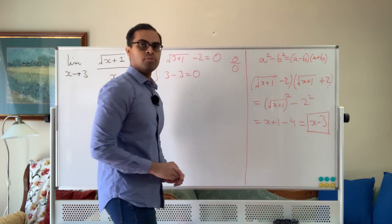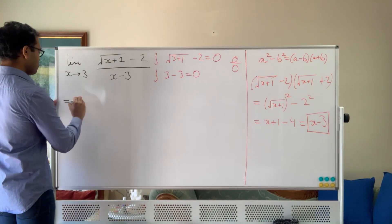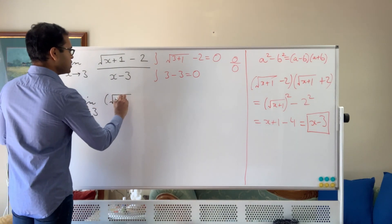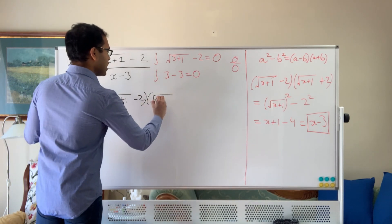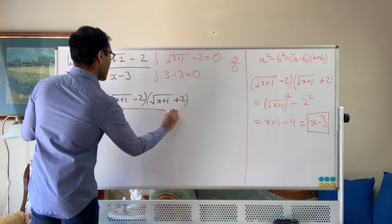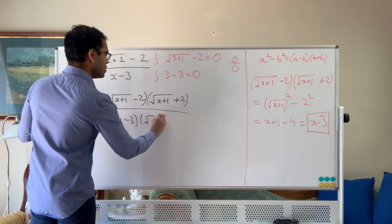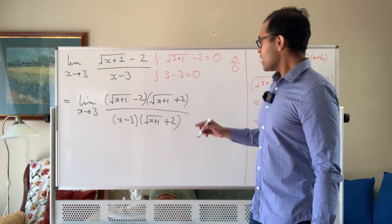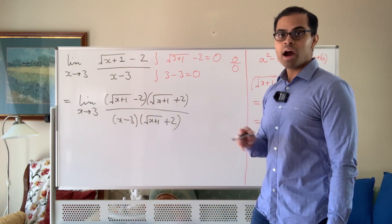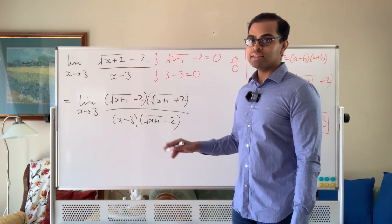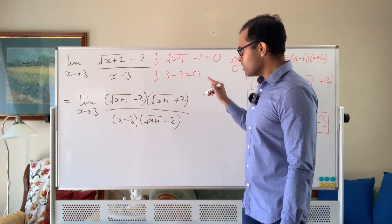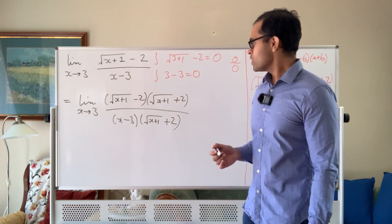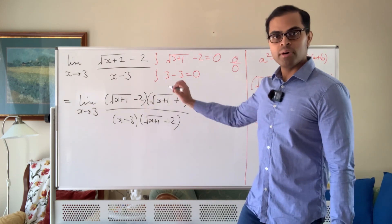So let's go through the step-by-step process. The first equality is: we multiply top and bottom by the conjugate, giving us root x plus 1 minus 2 times root x plus 1 plus 2, divided by x minus 3 times root x plus 1 plus 2. Keep in mind we've multiplied the same thing on top and bottom — this is crucial. You can't just multiply on top and forget the bottom, because then you'd be finding a different limit altogether.